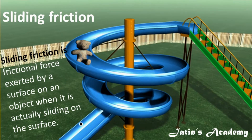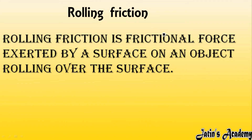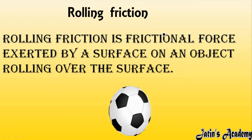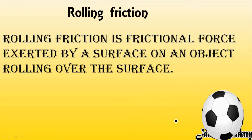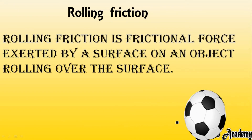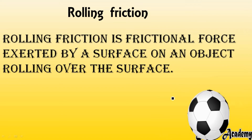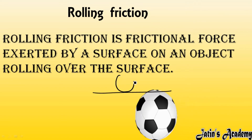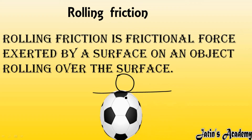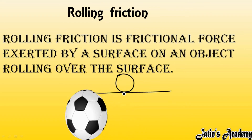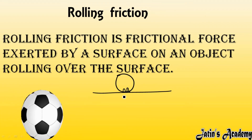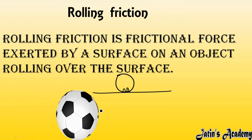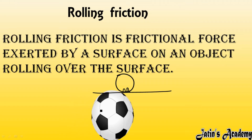Next, we are having rolling friction. As the name suggests, rolling friction occurs when one object is rolling over the surface of another object. As you can see, when the surface is like this, only a part of the ball is going to touch the surface, so interlocking will be less. If interlocking is less, then rolling friction is less, meaning the object can move for a longer time even by applying less force.